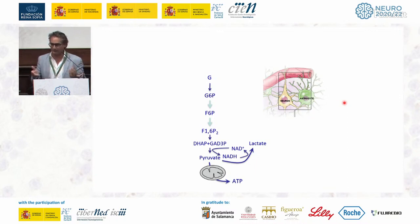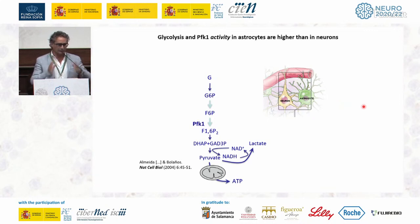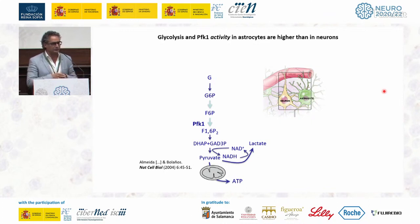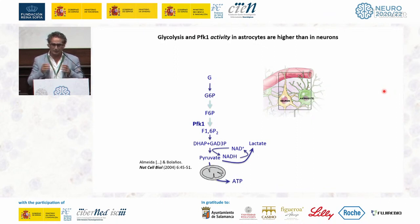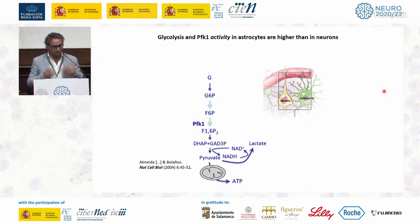Our work has led us to conclude that there is a massive difference between astrocytes and neurons in the way they metabolize glucose. Particularly, astrocytes consume glucose through the glycolytic pathway much faster than neurons — about three to four times faster. This is very important because it means astrocytes can use glucose as an energy substrate without needing mitochondria, which may also be important for neurons in a cooperating manner.